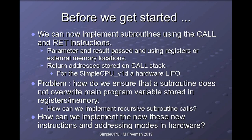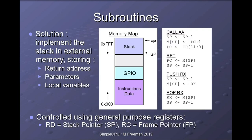One of the simplest memory management techniques to preserve subroutine state and manage parameters and local variables is an external stack, which we can implement in main memory. The stack can be allocated anywhere in the memory map; for Simple CPU version 1d it's allocated from address FFF downwards. To support stack management we have two pointers: the stack pointer, pointing to the top of the stack, and a frame pointer, pointing to parameters passed to the subroutine. We'll use register RD for the stack pointer and RC for the frame pointer.